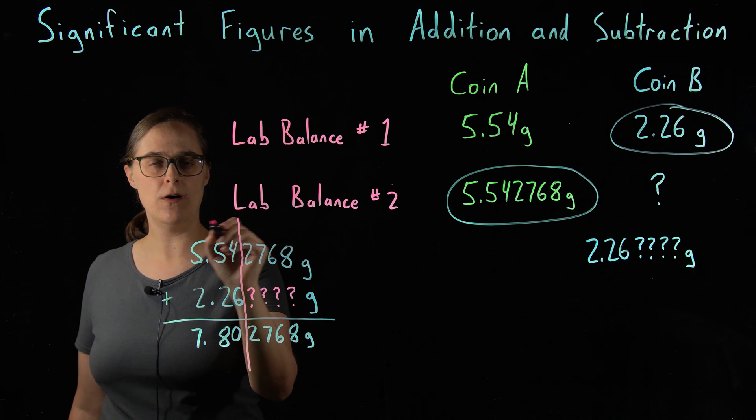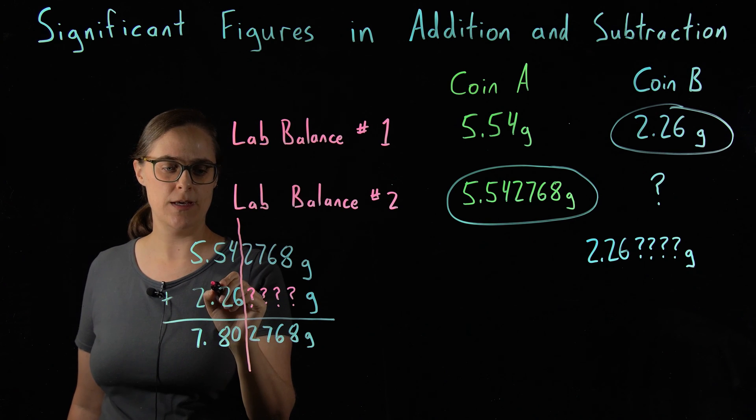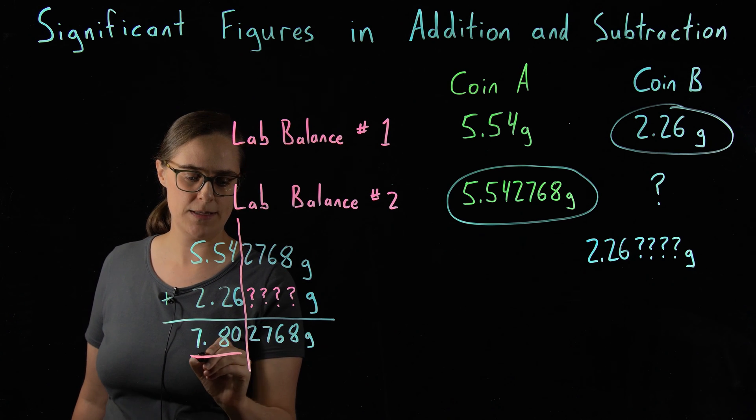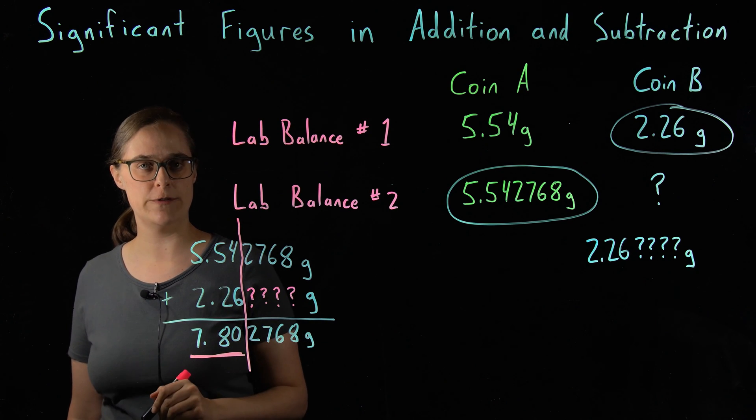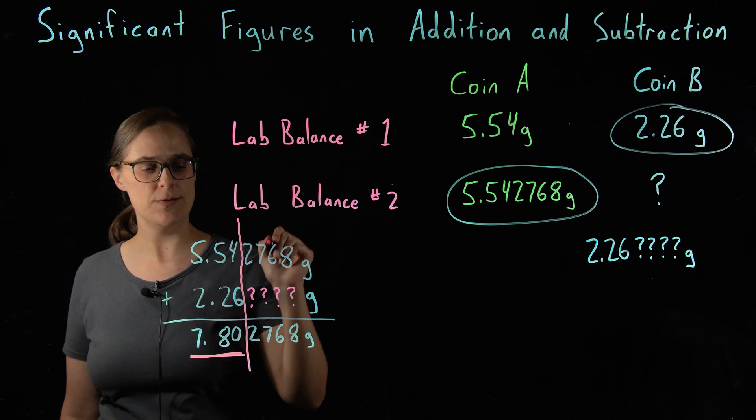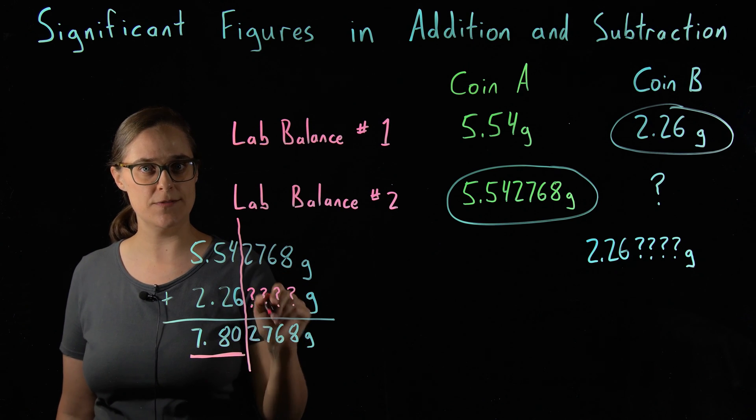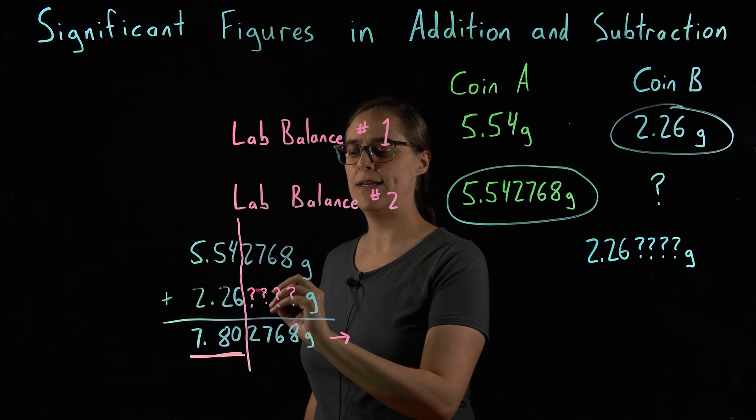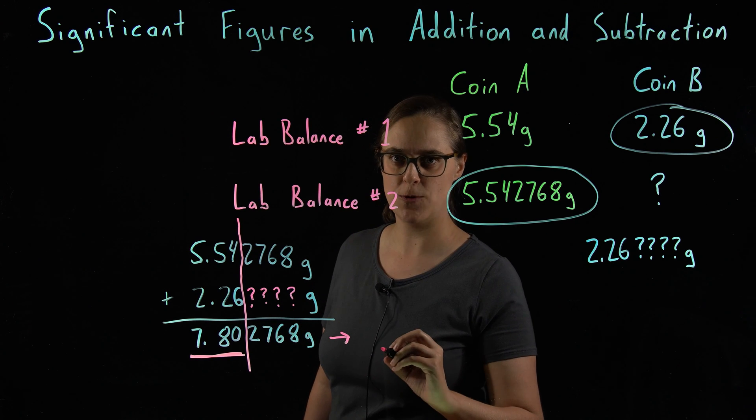We only know all of our starting numbers up through two digits after the decimal place. That means that is what we know for sure in our answer. So even though a calculator gives you this number, you need to round it, because your correct answer is 7.80 grams.